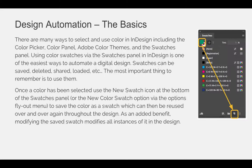Once a color has been selected, use the new swatch icon at the bottom of the swatches panel, or the new color swatch option via the options flyout menu, to save the color as a swatch, which can then be reused over and over again throughout the design. As an added benefit, modifying the saved swatch modifies all instances of it in the design. By using a swatch you are linking multiple things to a common base color, and if you modify that base — making it green or changing the green to yellow — everywhere you've used it will also change.